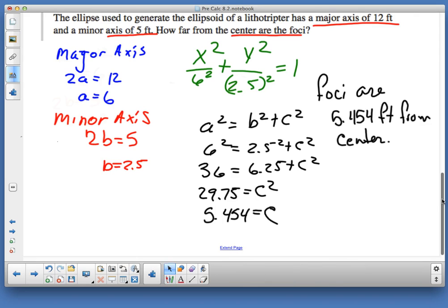So, I've got 36 equal 6.25 plus c squared. And I subtract the 6.25. And I get 29.75. Well, that's going to be a little bit more than 5. It ends up being like 5.454 as I take the square root of it. So they're asking how far from the center are the foci? The foci are 5.454 feet from center. Knowing that allows you to position your patient and be able to get their stones in the right spot so you can just kind of give them a blast and break them up. Are there any questions on how to or what for on this? All right.